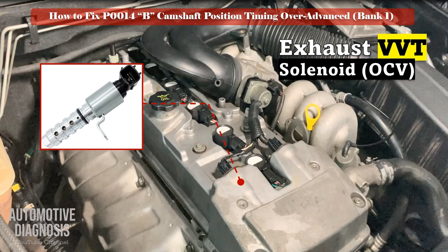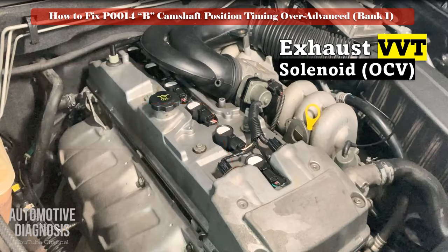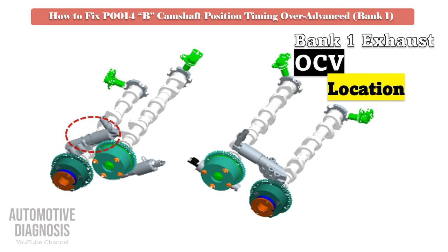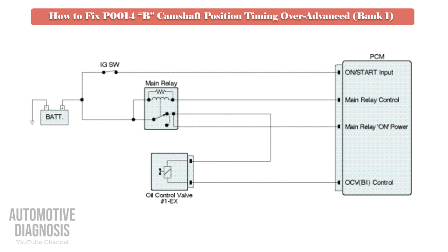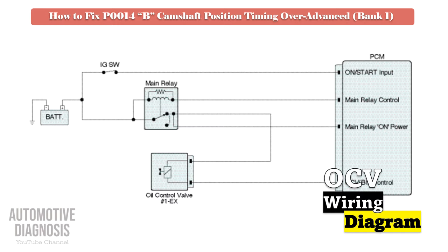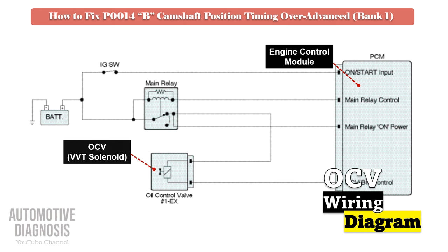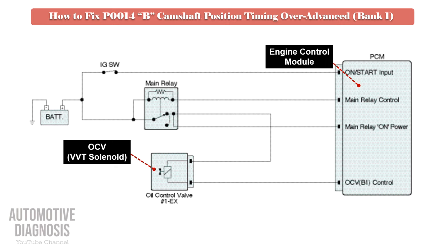If you have a four-cylinder engine or if the engine is inline, your engine has only one bank, and there will be only one exhaust OCV. Before doing anything, it is very important to review the OCV wiring diagram. As soon as you turn the ignition switch to the on position, power supply will be provided to OCV via the engine main relay, so you must have battery voltage on that pin. OCV is also controlled by PCM using the other wire, so the control line must be checked too.